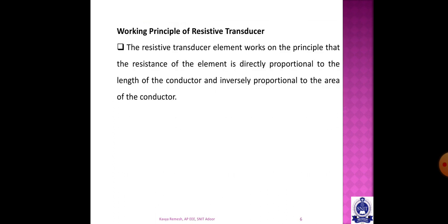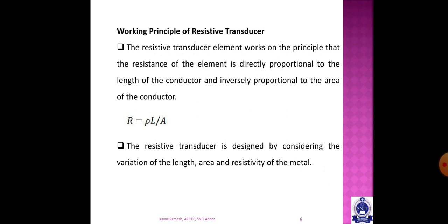The working principle uses the resistance equation: R = ρL/A. Resistance is proportional to resistivity and the length of the conductor in meters, and inversely proportional to the area of cross-section of the conductor in square meters. We use this principle to measure position and convert conductor length into a resistance value.